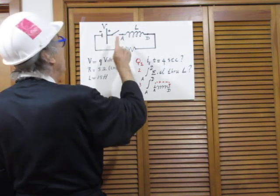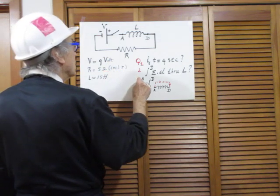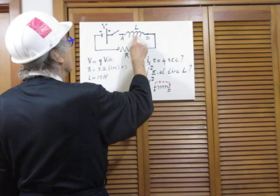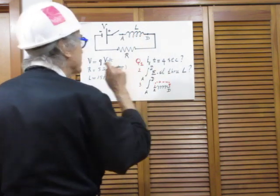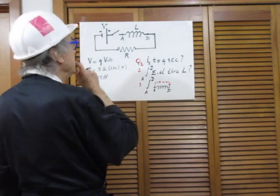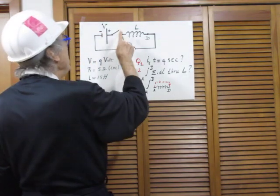Now I want to know what that integral is, E dot dL, in going from A to D through the wire of the self-inductor. That's question number two. And then question number three: